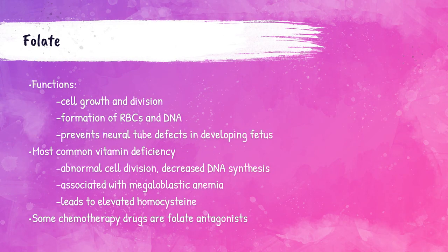Folate, or folic acid, is important for the growth and division of cells, the production of red blood cells and DNA, and helps to prevent neural tube defects in babies in utero. Folate deficiency is currently the most common vitamin deficiency. Patients with a deficiency of folate may experience atypical division of cells, megaloblastic anemia, and can experience an elevation in levels of homocysteine — which was discussed in the enzymes and cardiac marker lectures.